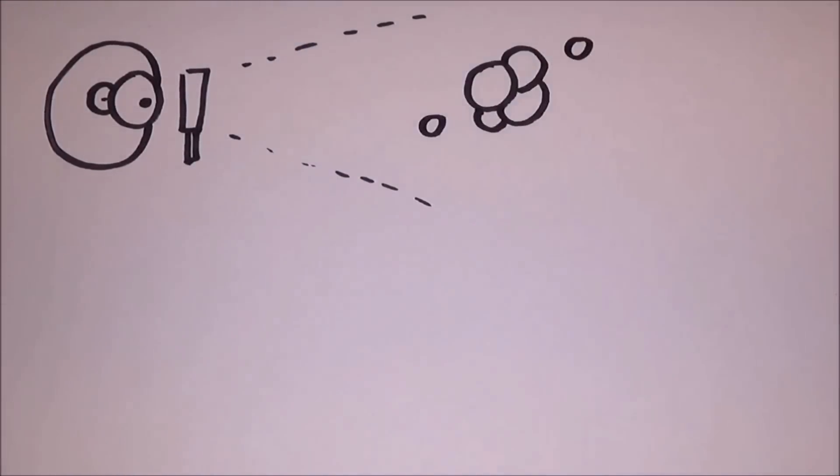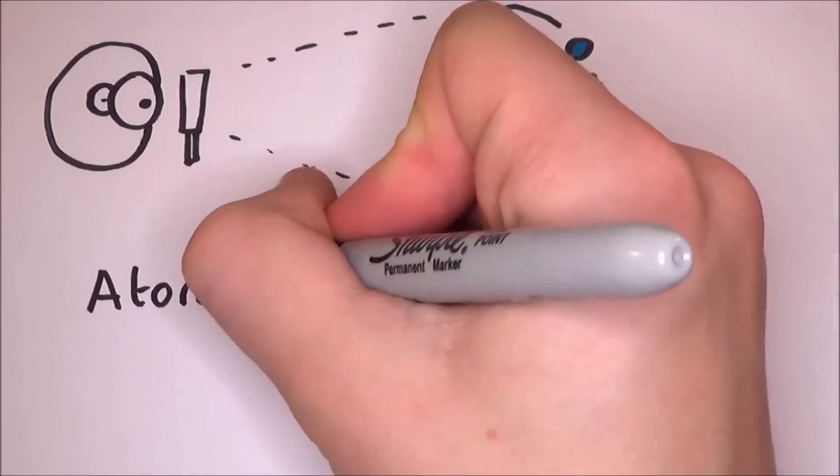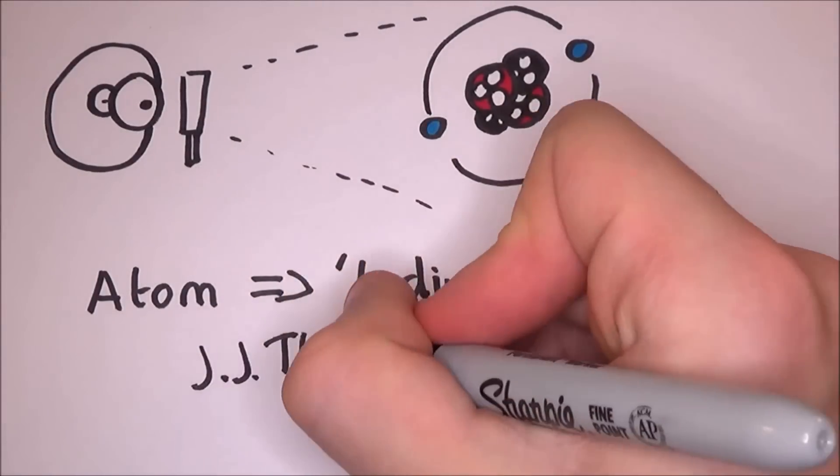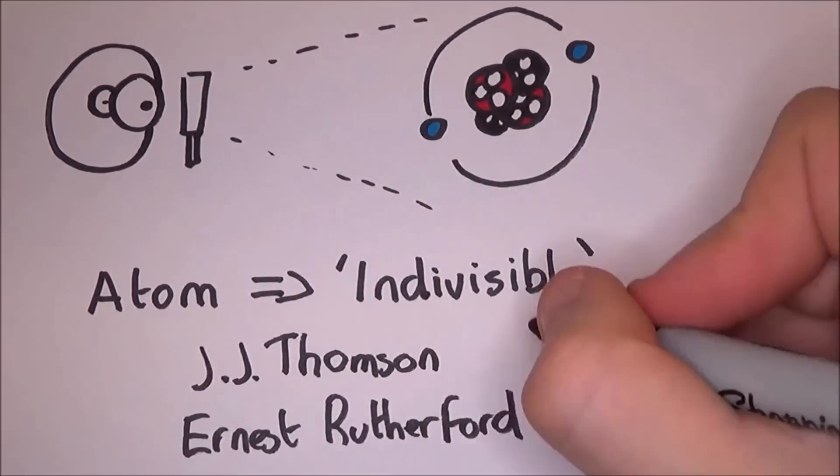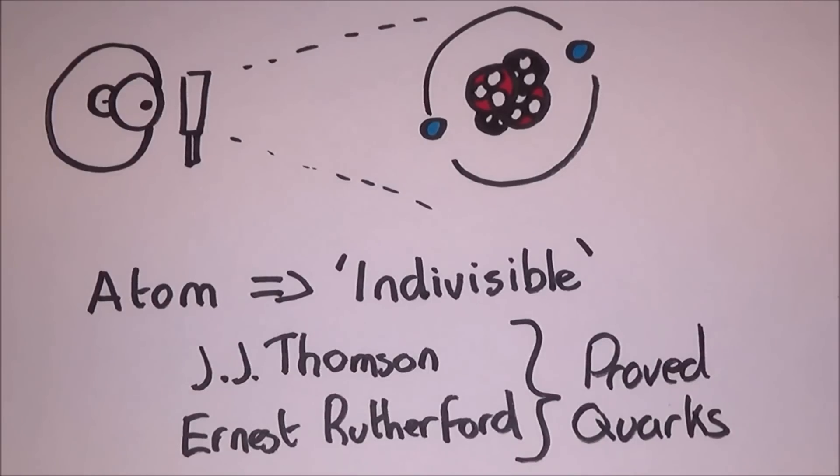One of the things particle physics like to do is to see what is the smallest possible form of matter. The word atom itself is originally from the Greek word for indivisible. Of course JJ Thompson and Ernest Rutherford proved that atoms can be split into smaller sources of matter. Then we got even smaller with quarks.